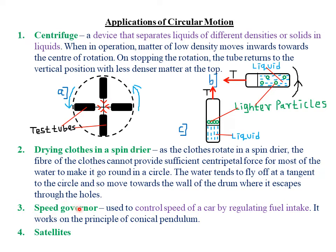The third application is in speed governors, which control a vehicle's speed by regulating fuel intake. A speed governor works on the principle of the conical pendulum. Parts of the governor rotate in a circular path, and the centripetal force determines the fuel intake. When fuel intake is large, the vehicle accelerates; when limited, the speed is low.